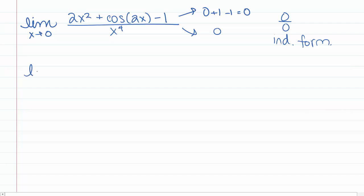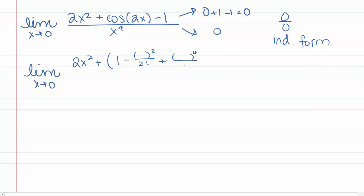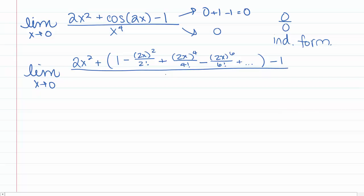We can rewrite this as the limit as x goes to 0 of 2x² plus the Taylor series for cos(2x). We know the Taylor series for cos(x): it's 1 - x²/2! + x⁴/4! - x⁶/6! + ⋯. Since it's cos(2x), we put 2x in each spot where x appears. Then we subtract 1 and divide by x⁴.